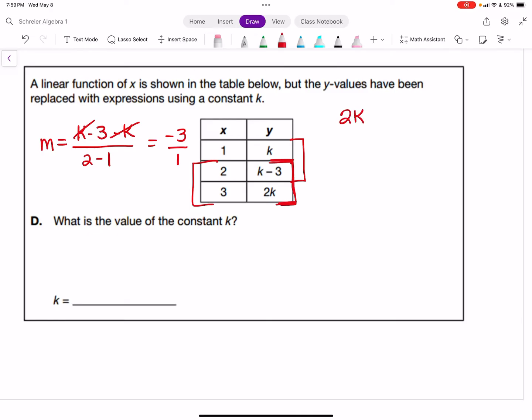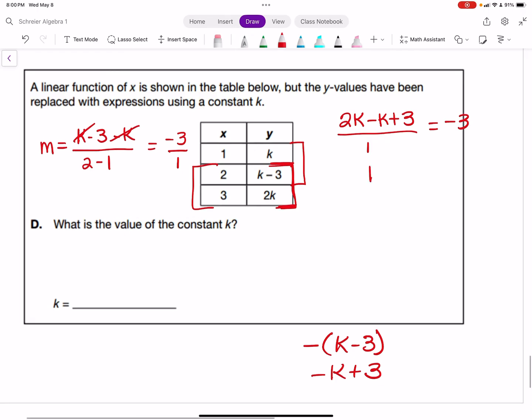So (k + 3)/(3 - 2), which is (k + 3)/1, equals -3. That's k + 3 = -3. Subtracting 3 from both sides, we get k = -6. That's what they ask: the value of the constant is -6. That's the end of our review for the Keystone exam. Good luck to all of you taking your keystones.